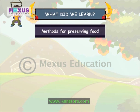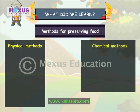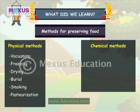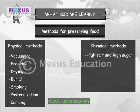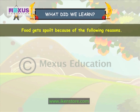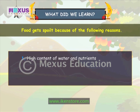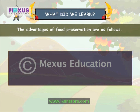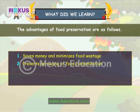We learnt about the methods for preserving food. There are two methods — physical and chemical. Physical methods involve vacuuming, freezing, drying, burial, smoking, pasteurization, and canning. Chemical methods involve high salt and high sugar addition, citric acid and ascorbic acid storage, and addition of antioxidants. Food gets spoiled because of high content of water and nutrients or the activity of food enzymes. The advantages of food preservation are: it saves money and minimizes food wastage, it prevents spreading of food contamination, and it keeps us healthy.